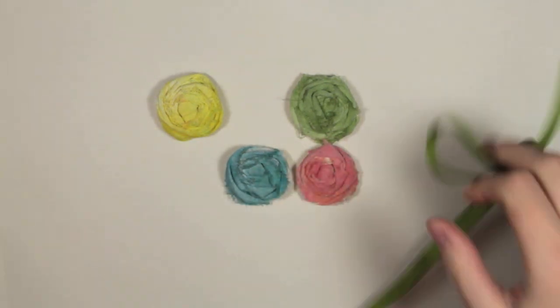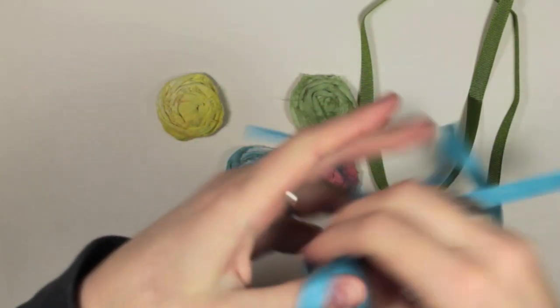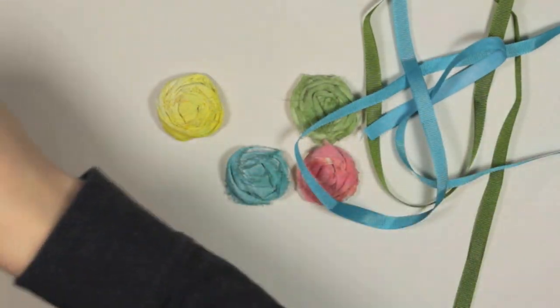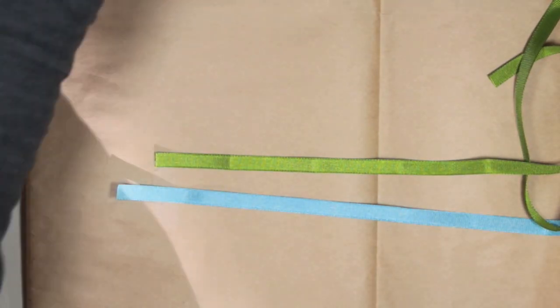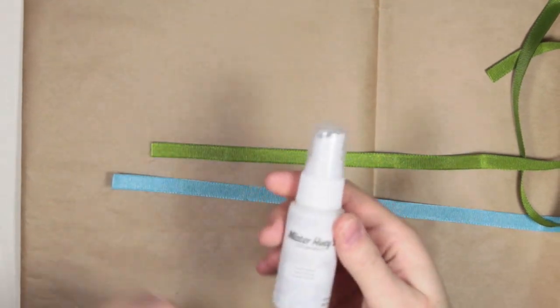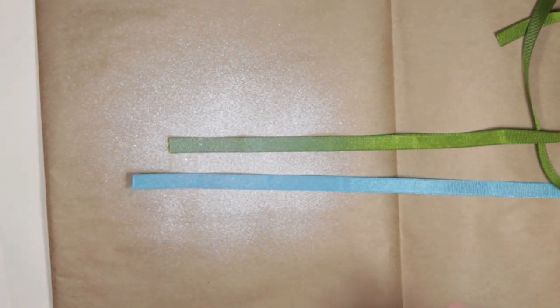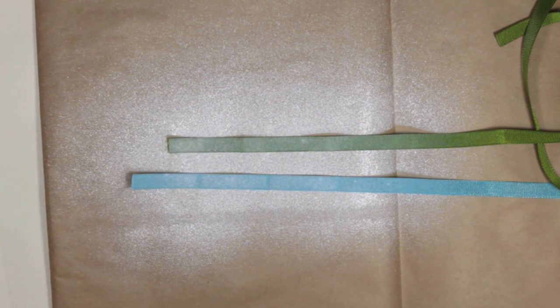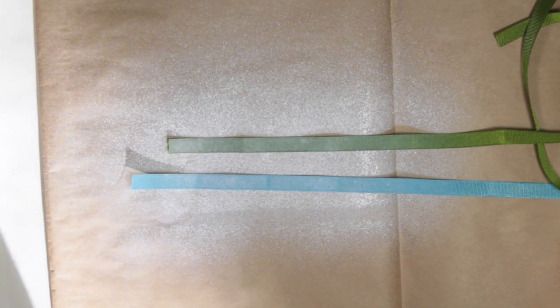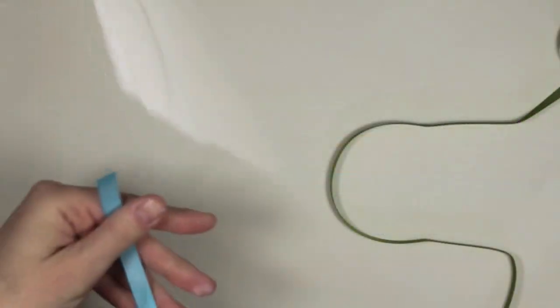Now I'm pulling out some of the ribbon found in this card add-on set. I'm adding white Mr. Huey's to both ribbons to tone the color down and give it more of that shabby chic look. I'm taking my heat tool once again to speed up the drying process.